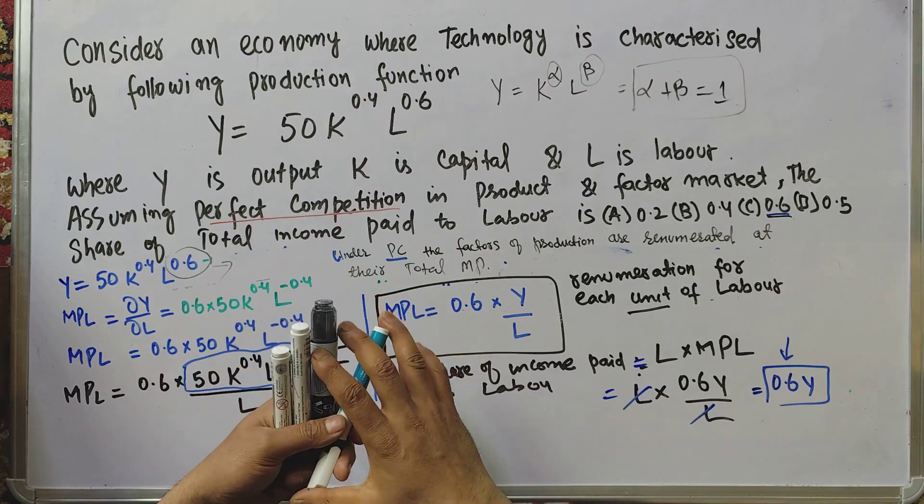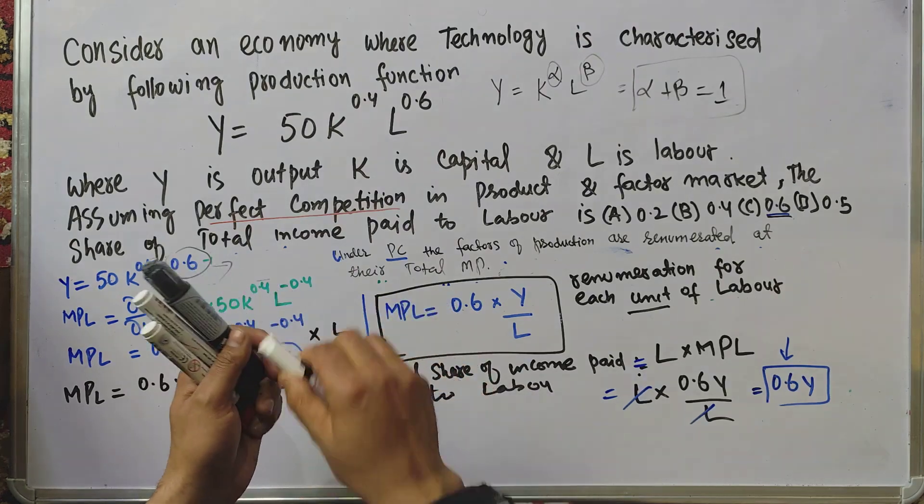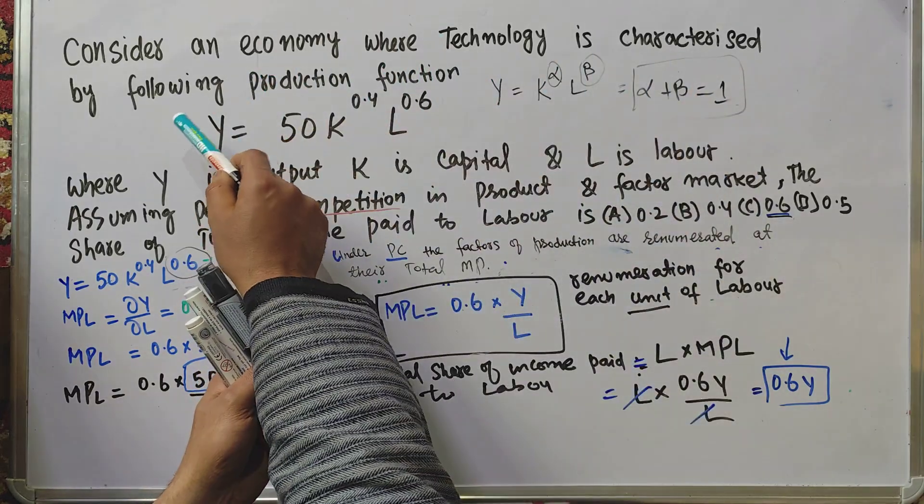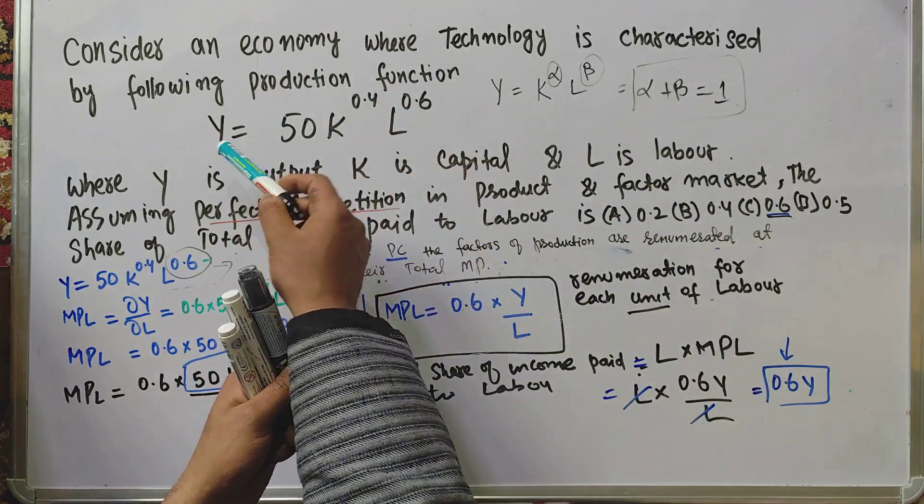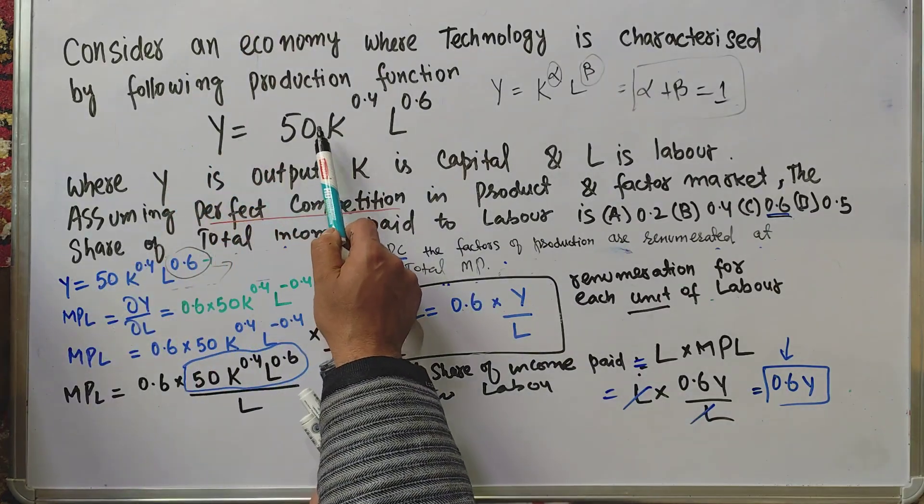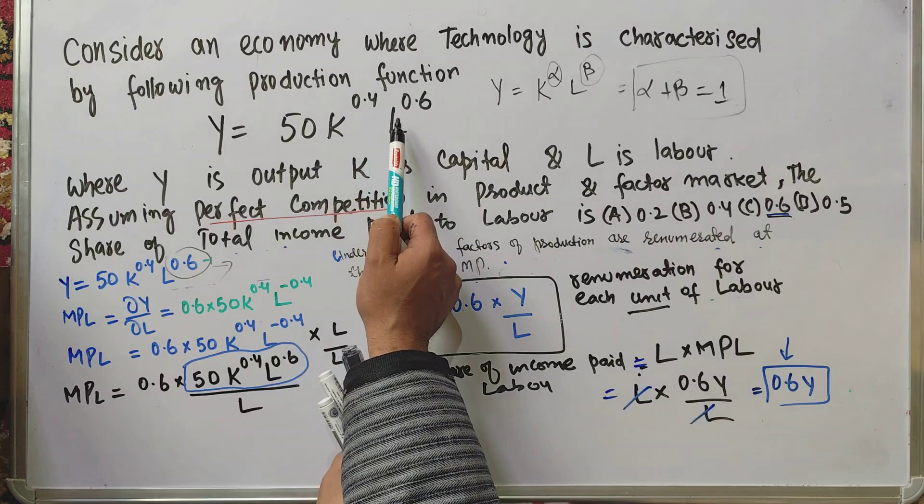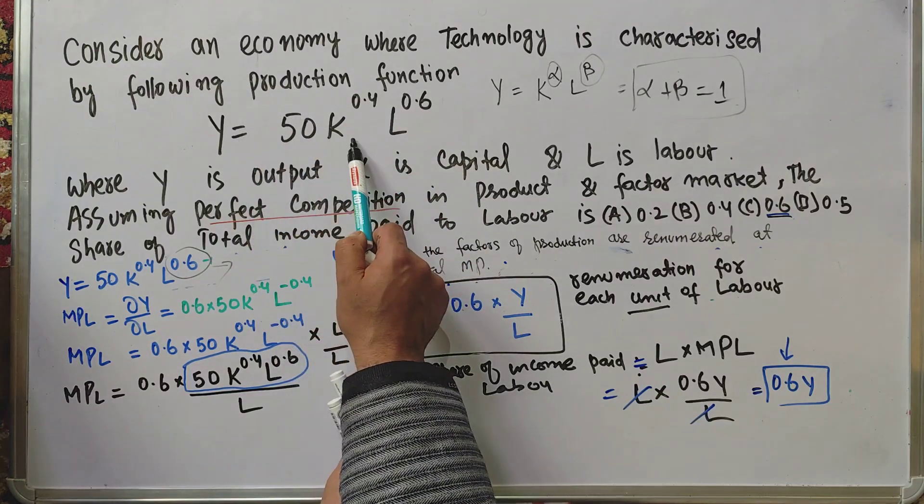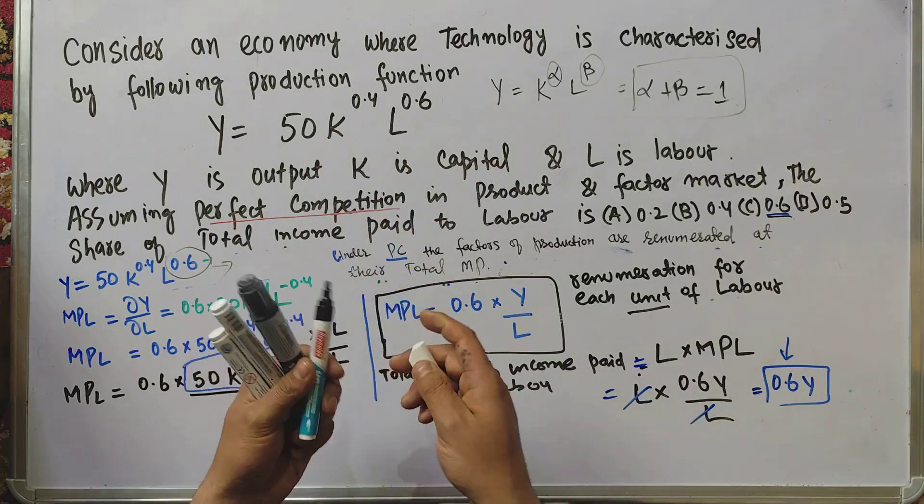Let us solve a question on production function. Consider an economy where technology is characterized by the following production function: Y = 50K^0.4 L^0.6, where Y is output, K is capital, and L is labor.